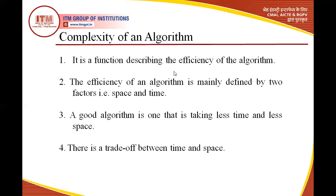Complexity is a function describing the efficiency of an algorithm. By measuring this efficiency, we can find which algorithm is better. The efficiency of an algorithm is mainly defined by two factors: space and time. So there are two complexities — space complexity and time complexity — which together define the efficiency of an algorithm.